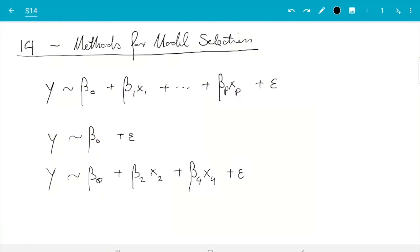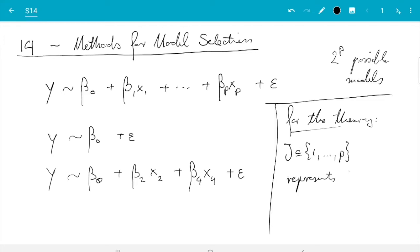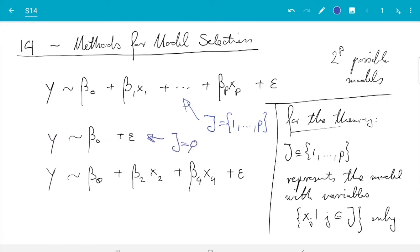And there are p inputs each of which can be in or not in. So what we have is we have two to the p possible models. And we need to now think if I am going to write the algorithm or formulas or a computer program. How do I actually say which model is in. So in this list if I want to continue and enumerate our models I need to do this somehow. And for the theory I want to do that just by giving the indices of the variables which are included. So j is the subset of the indices 1 up to p. And that represents the model with variables xj where j is in capital J only. So these are in and the others are out. So just to try out that notation then the first model has all variables. So here we have j is indices of all variables which are in. So that's all numbers from 1 to p. And this model has no variables. So here j would be the empty set. And here j would be 2 and 4.